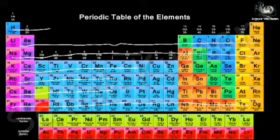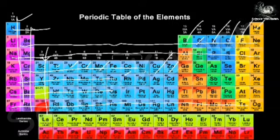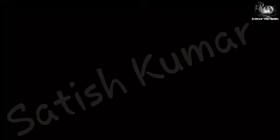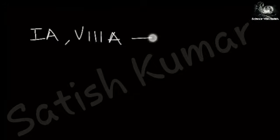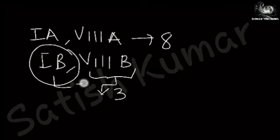The vertical columns are called groups, numbered 1 through 18. These 18 groups are named as 1A, 2A, and so on up to 8A, plus 1B through 8B, where 8B contains 3 groups. So 3 plus 7 is 10, plus 8, gives 18 groups total.